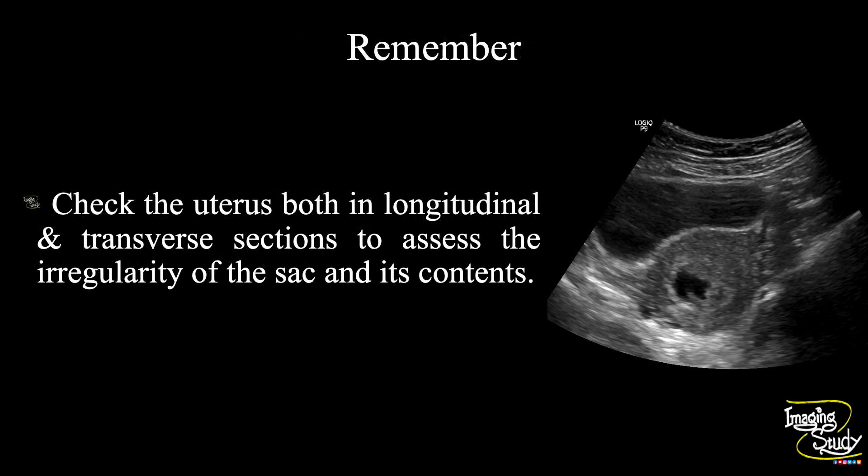Now the take-home message. Check the uterus both in longitudinal and transverse sections to assess the irregularity of the sac and its contents in a patient who comes to you with early pregnancy pervaginal bleeding. This may help exclude over-diagnosis in confusing cases. If the sac doesn't look much irregular, then you may wait for a few days before making a diagnosis of incomplete abortion.